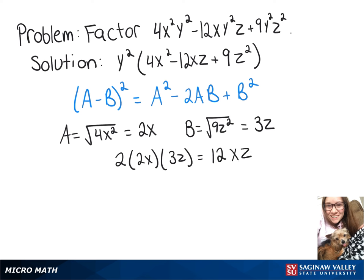So now, we can rewrite 4x squared y squared minus 12xy squared z plus 9y squared z squared as y squared times 2x minus 3z quantity squared.